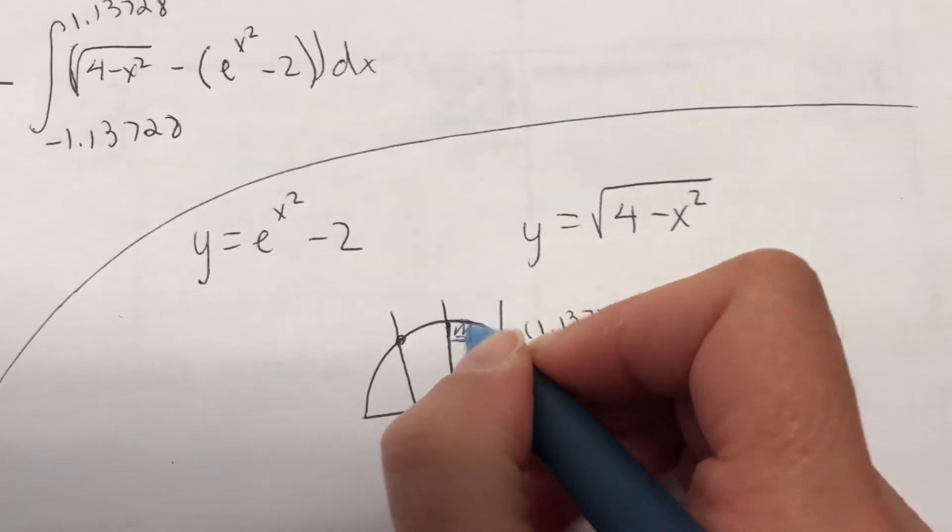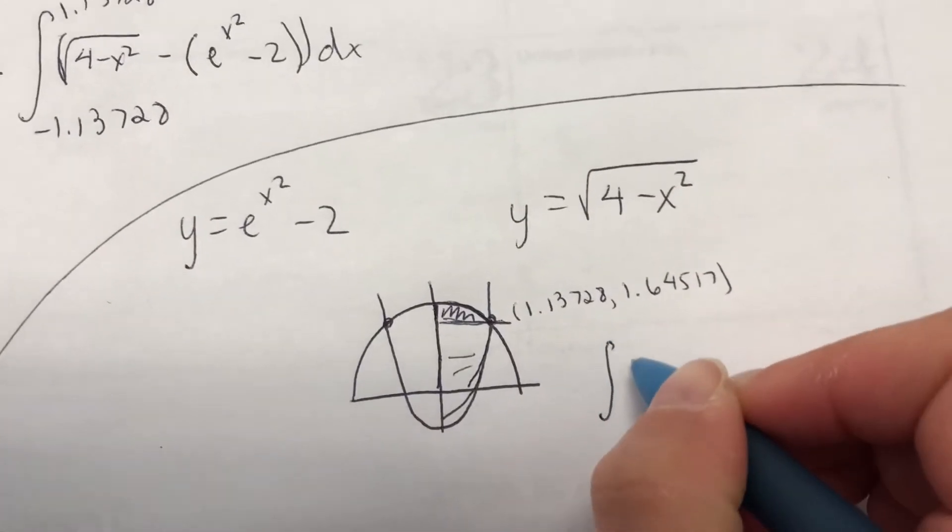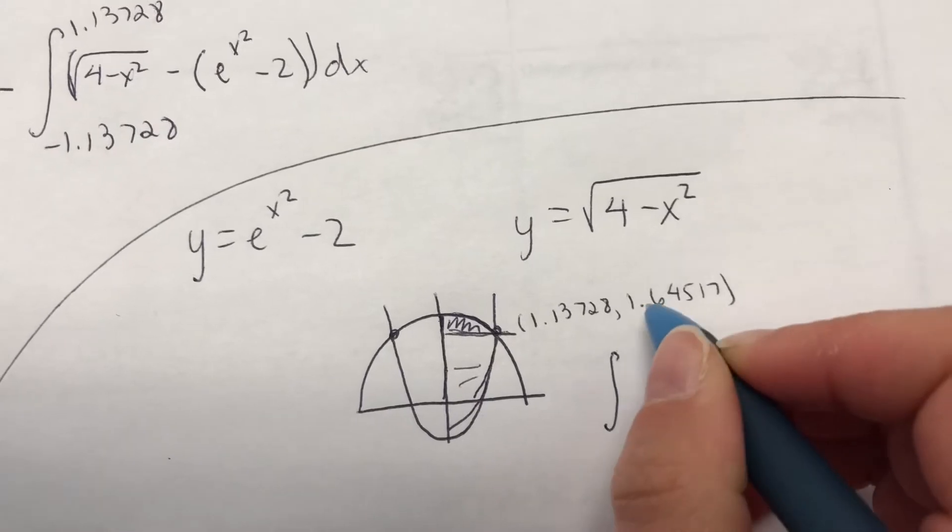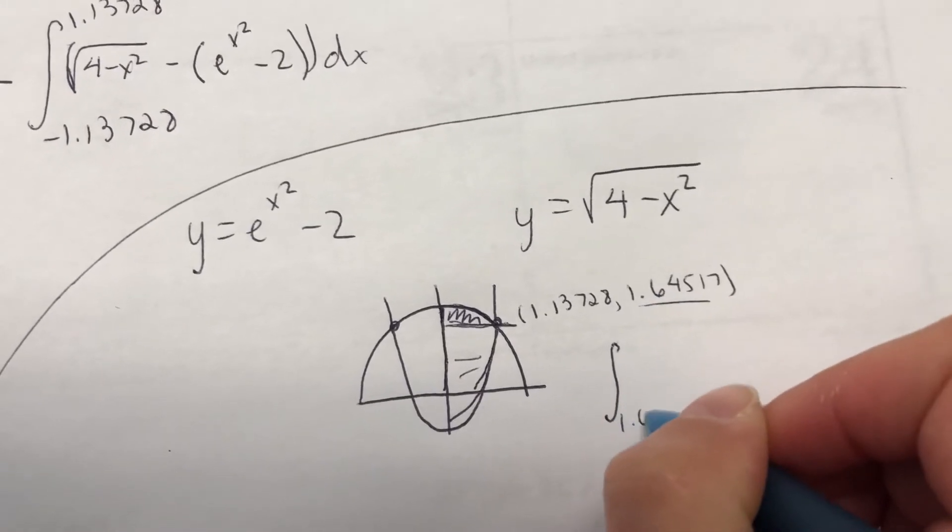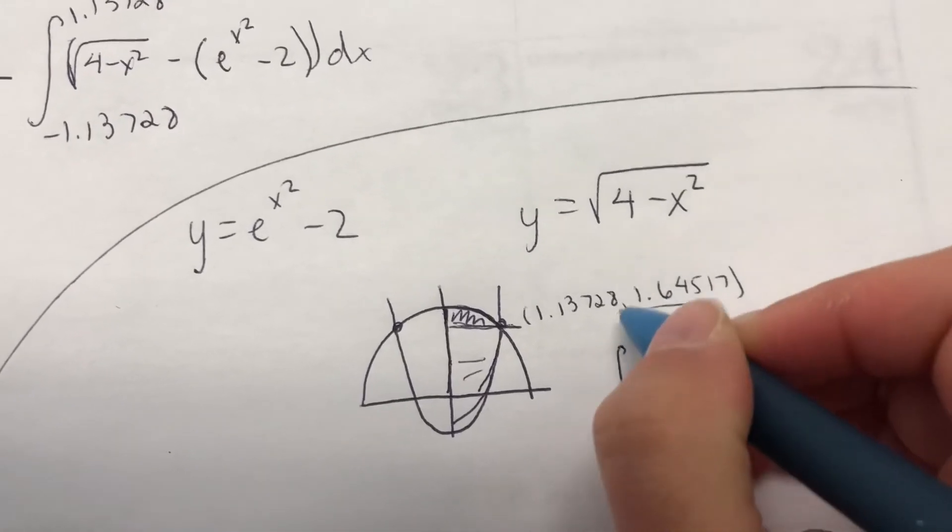So let's find this little piece first. That would just be the integral. So it would start with this y value, 1.64517, and then that ends at 2.